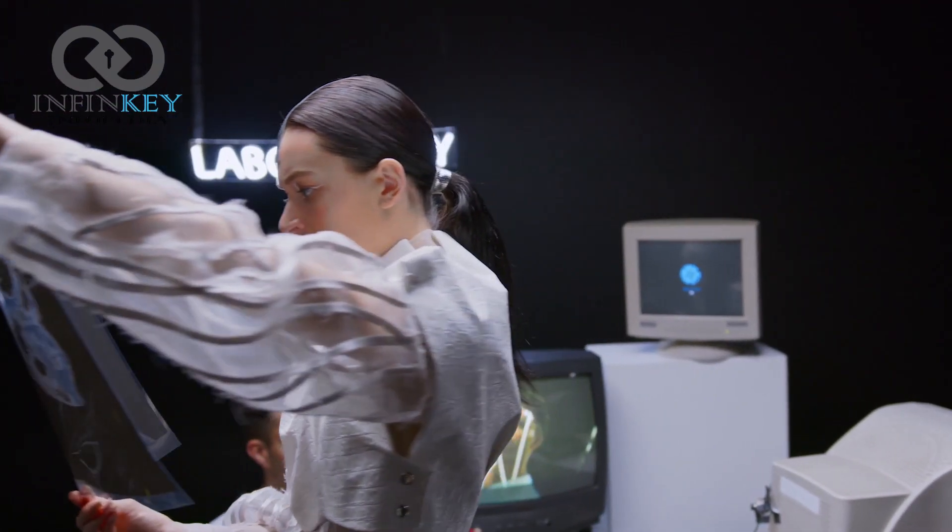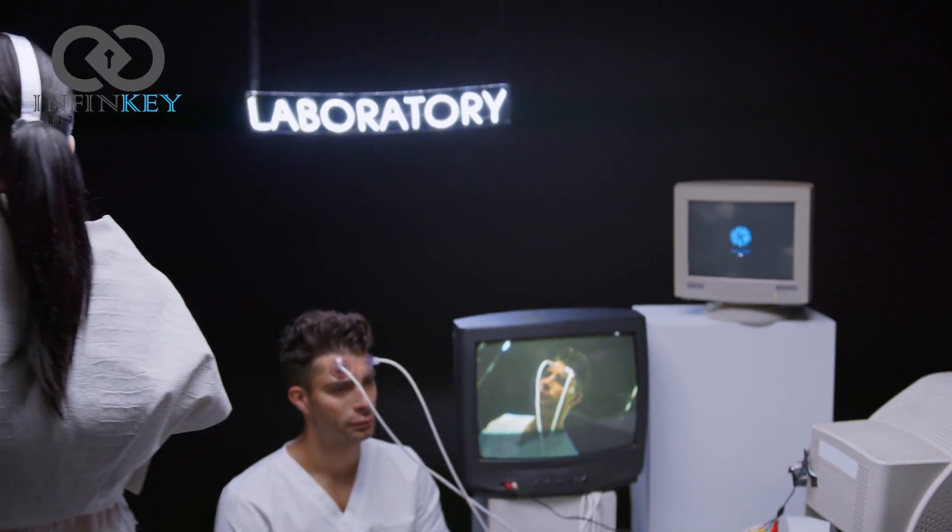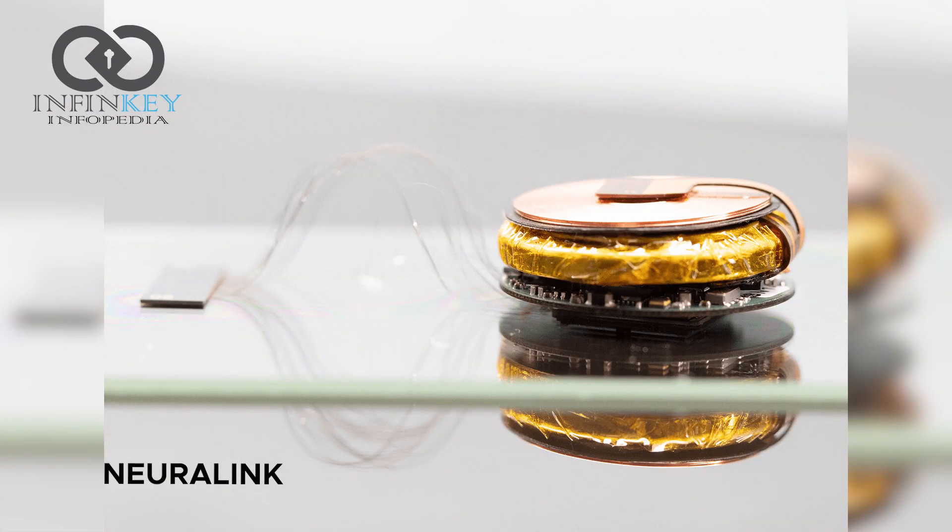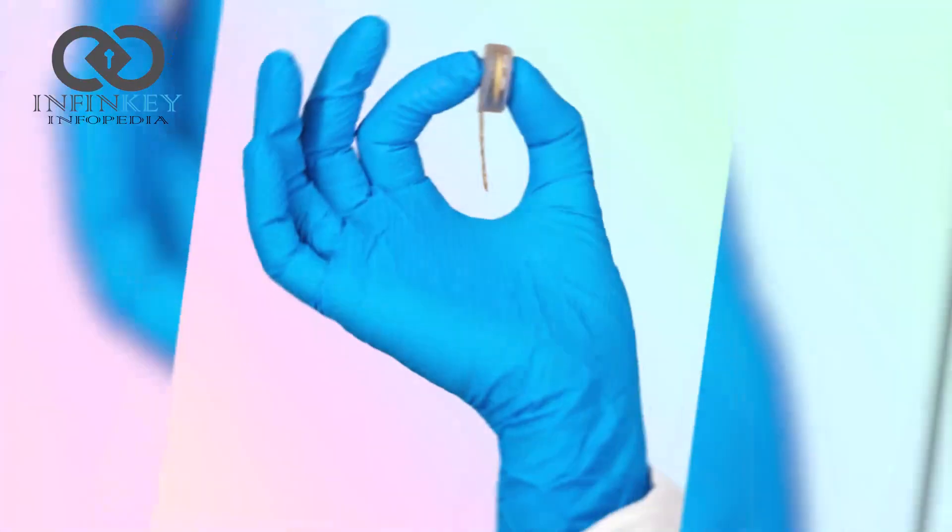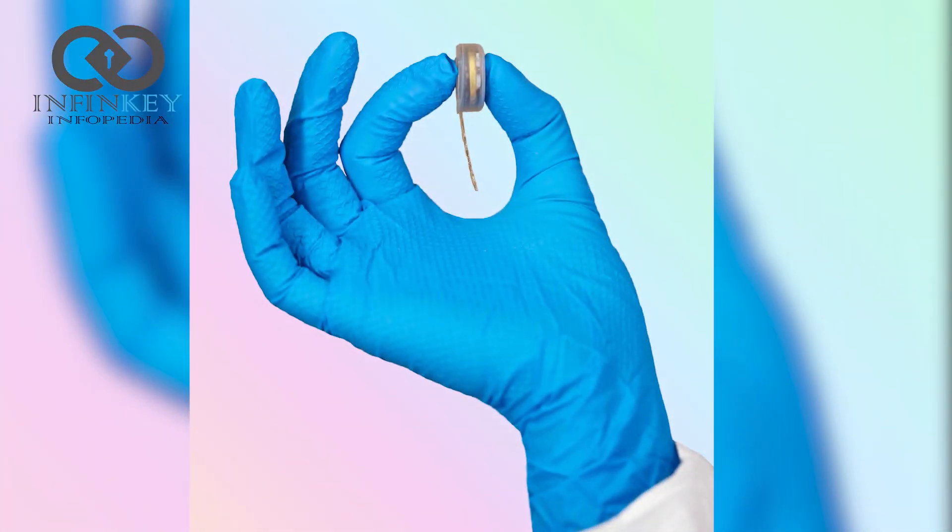Neuralink is developing two bits of equipment. The first is a chip that would be implanted in a person's skull, with electrodes fanning out into their brain. The chip is about the size of a coin and would be embedded in a person's skull.